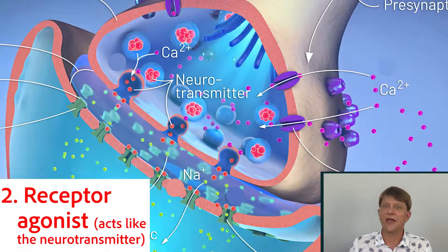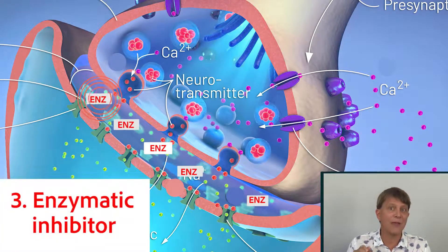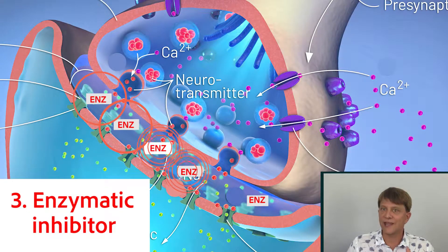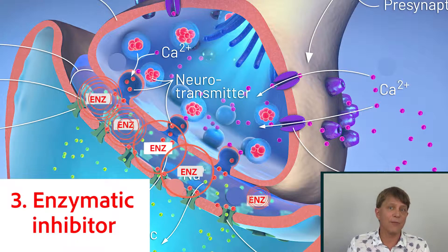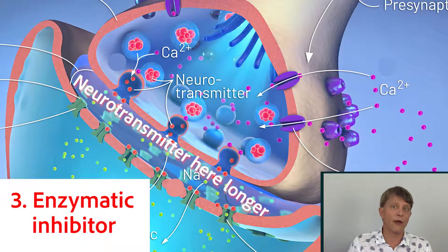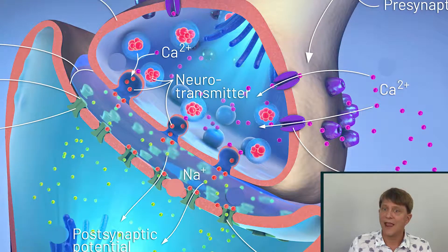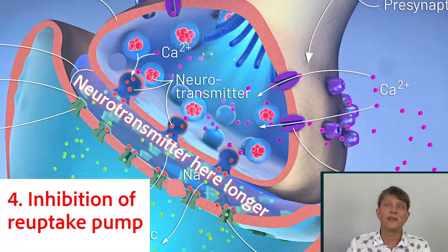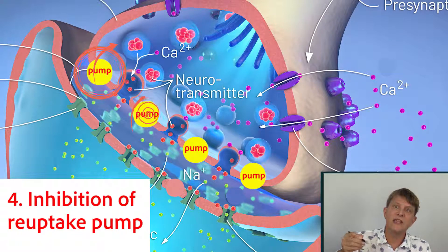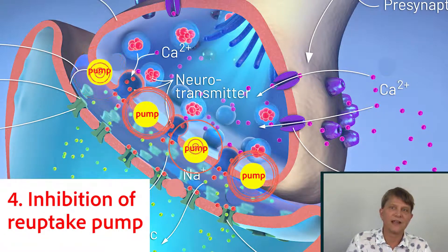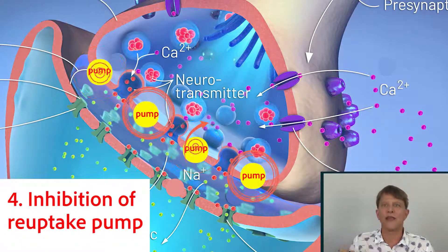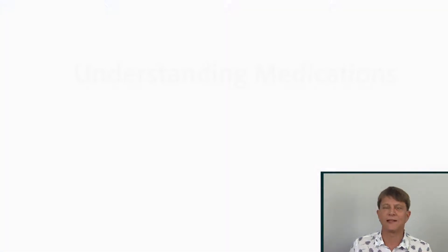Another mechanism is to affect the enzyme in the synaptic cleft. We would inhibit that enzyme — the one that breaks down the neurotransmitter — resulting in the neurotransmitter remaining in the synaptic cleft longer. Similarly, affecting the reuptake pump — the pump that pulls neurotransmitters back into the original cell — also results in the neurotransmitter staying in the synaptic cleft longer.